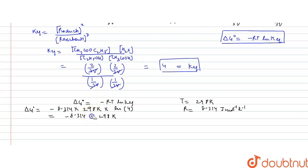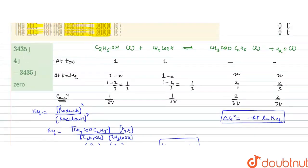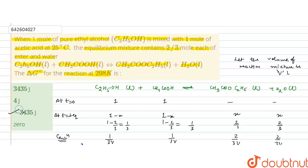The units are J/mol·K multiplied by 298 K, so kelvin cancels and we get the value in J/mol. After calculating, ΔG° = −3435 J/mol. So the standard free energy change for the reaction is −3435 J/mol, and the correct option is C, that is −3435 J/mol. I hope you understood the solution, thank you.